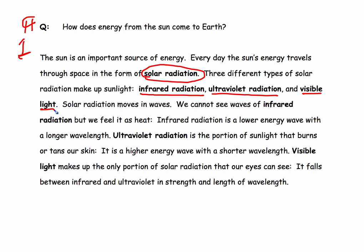Solar radiation moves in waves. We cannot see waves of infrared radiation, but we feel it as heat. Infrared radiation is a lower energy wave with a longer wavelength. Ultraviolet radiation is the portion of sunlight that burns or tans our skin. It is a higher energy wave with a shorter wavelength.